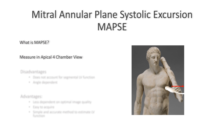Let's talk about some of the advantages and disadvantages of MAPSE. One of the disadvantages is that it does not account for segmental left ventricular function, thus it should not be used to estimate left ventricular function in patients that have regional wall motion abnormalities, fibrosis, conduction disorders, etc. It's also angle dependent, so you need to ensure taking perpendicular measurements when measuring MAPSE.